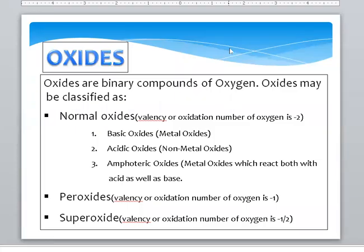Oxides — what are Oxides? Oxides are binary compounds of Oxygen. Oxides may be classified as Normal Oxide, Peroxide, and Super Oxide.